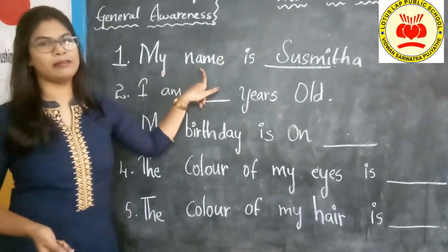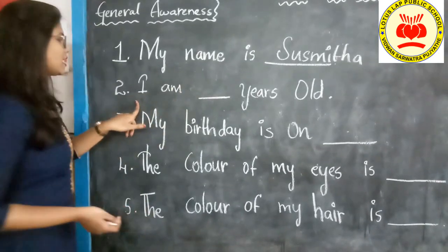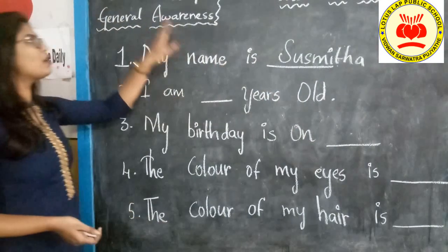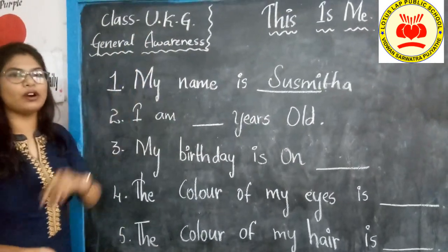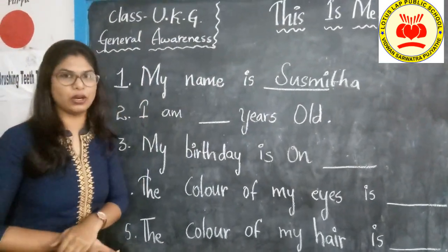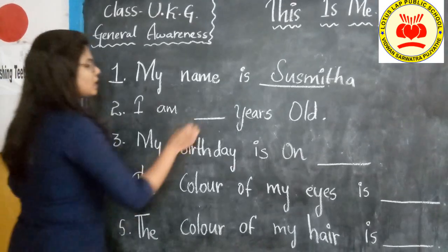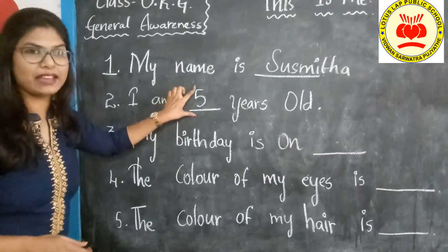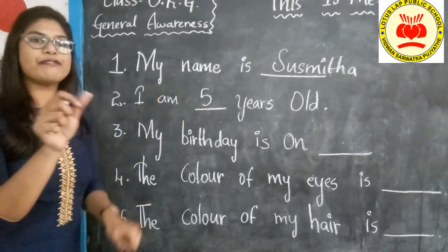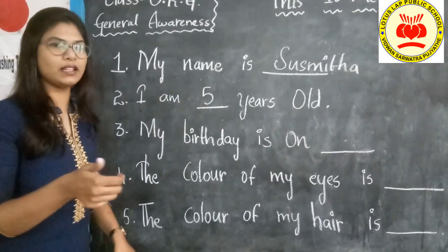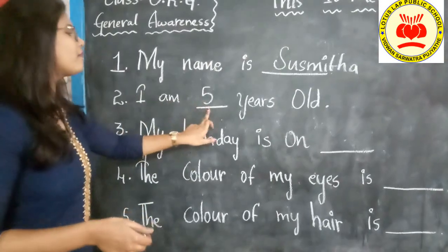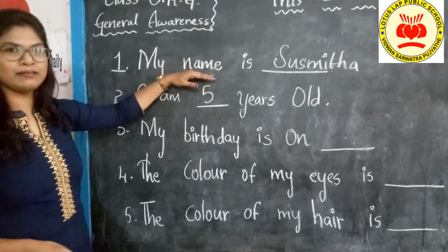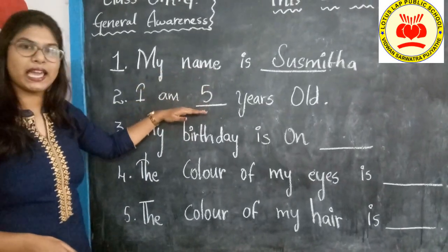First thing is my name. Next, 'I am dash years old'. As you are in UKG, you will be five years old. I am five years old. Either you can write five or the word F-I-V-E. I am five years old. Completed — name as well as age.